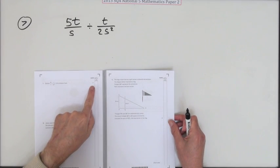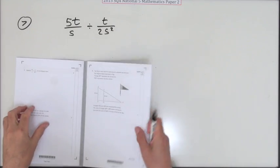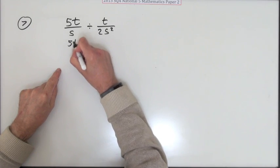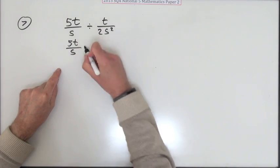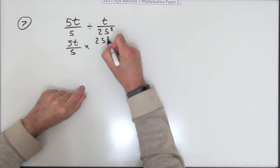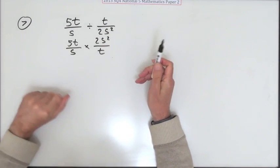Number seven, for three marks. This is quite a nice wee thing for three marks here, it's just a divide. So you've got 5t over s, change divide to multiply by the reciprocal, so 2s squared over t. Now cancel.